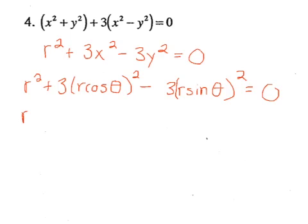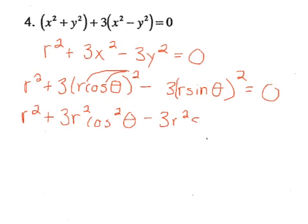So that will give us R squared plus 3, and remember the square needs to go to the R and the cosine. So 3R squared cosine squared theta minus 3R squared sine squared theta.